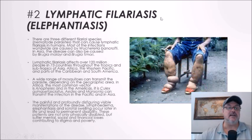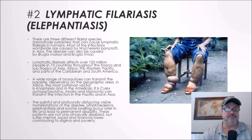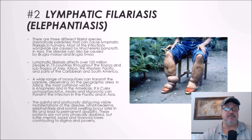Our second mosquito-borne disease is also a parasitic one: lymphatic filariasis. There are three different filarial species that cause lymphatic filariasis in humans. Most infections worldwide are caused by Wuchereria bancrofti. In Asia the disease can also be caused by Brugia malayi and Brugia timori. Lymphatic filariasis affects over 120 million people in 73 countries throughout the tropics and subtropics of Asia, Africa, the western Pacific, and parts of the Caribbean and South America.